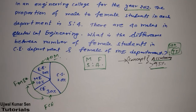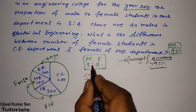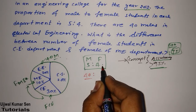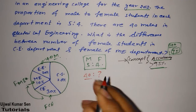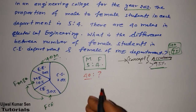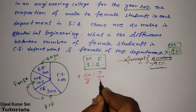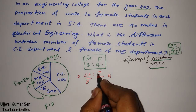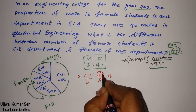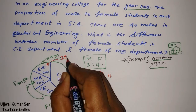Now, how many females are there in electrical engineering? Look at the ratio — it is 5 to 4. If 40 males maps to 5 parts, then to find 4 parts: divide 40 by 5 to get 8, then multiply 8 by 4 to get 32. So in the electrical engineering department we have 32 female students.